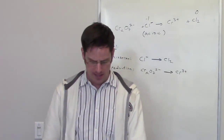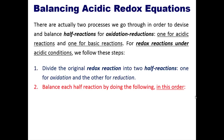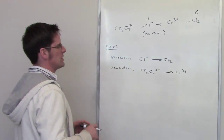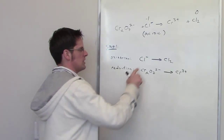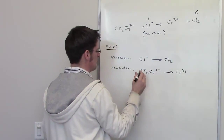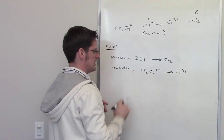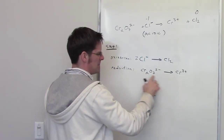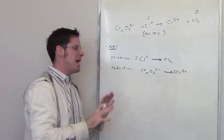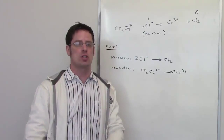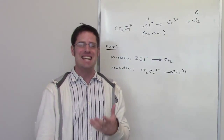In step two, we balance each half-reaction in order. First, balance elements other than hydrogen and oxygen. For the oxidation half-reaction, Cl⁻ → Cl₂ is balanced by placing a coefficient of 2 in front of Cl⁻. For the reduction half-reaction, I've got two chromiums on the left, so I put two chromiums on the right. Now all elements other than hydrogen and oxygen are balanced.